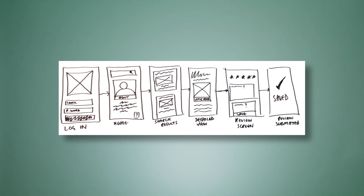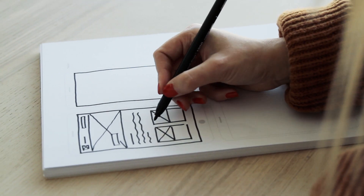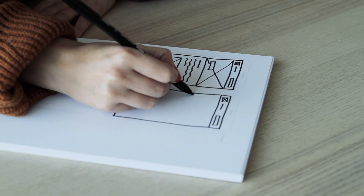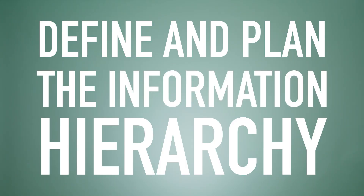So what exactly is a wireframe? Put simply, it's a two-dimensional drawing of a page's interface. Imagine you were designing a mobile app — you would need to create wireframes for each screen that the user moves through when using the app. A wireframe is used to define and plan the information hierarchy on a page or screen. In other words, how should the items on the page be organized? What content goes where? How should space be allocated? And what functionalities are available?